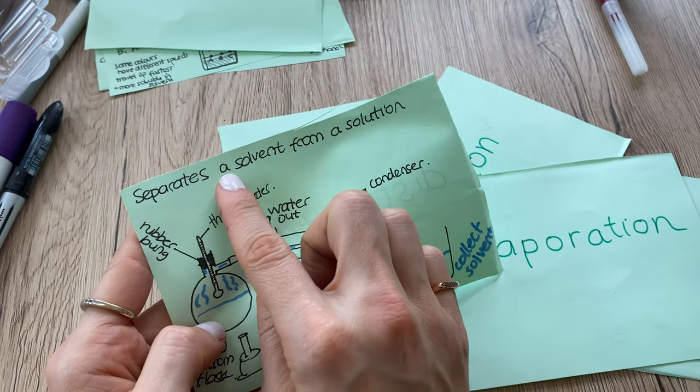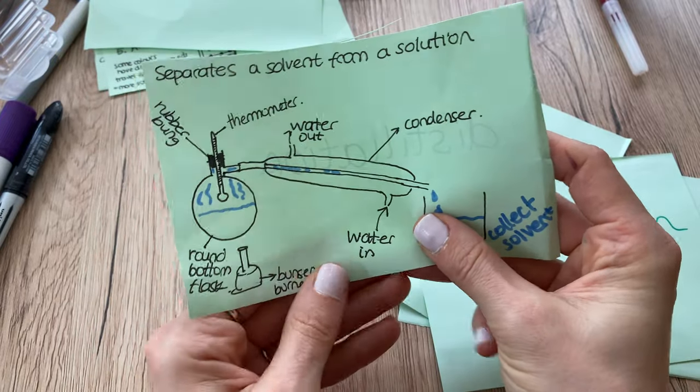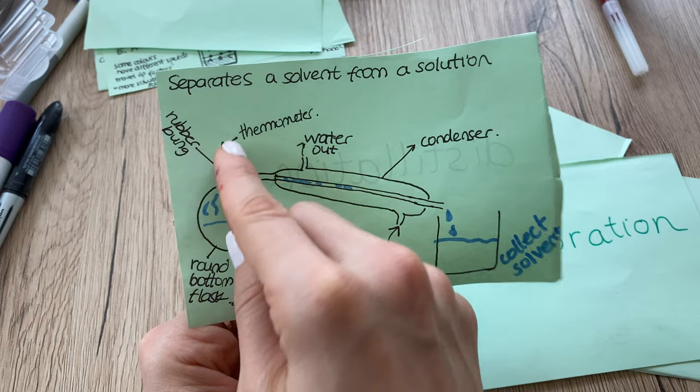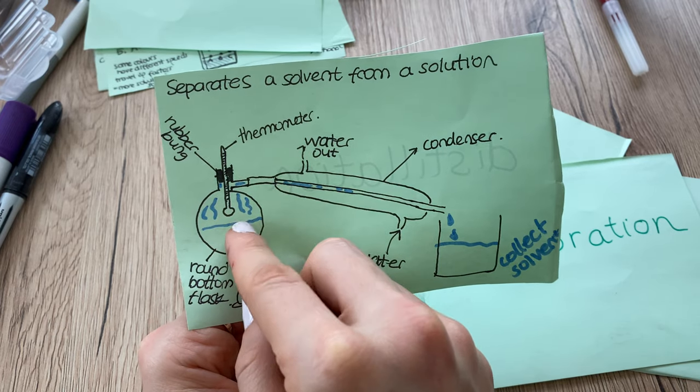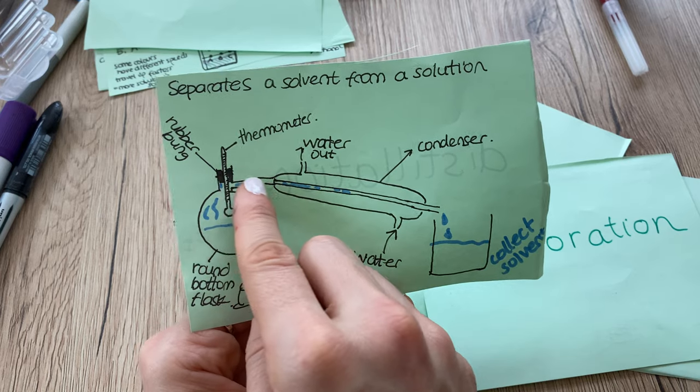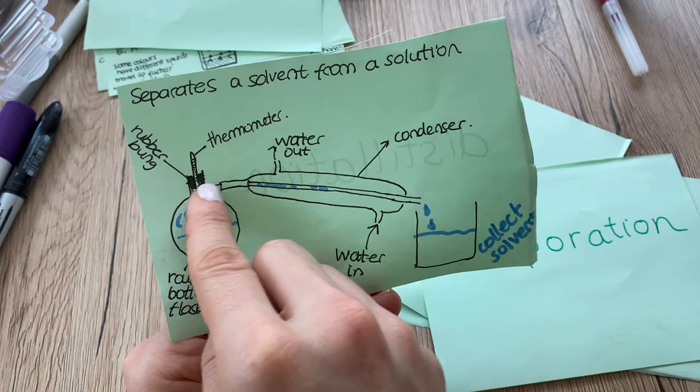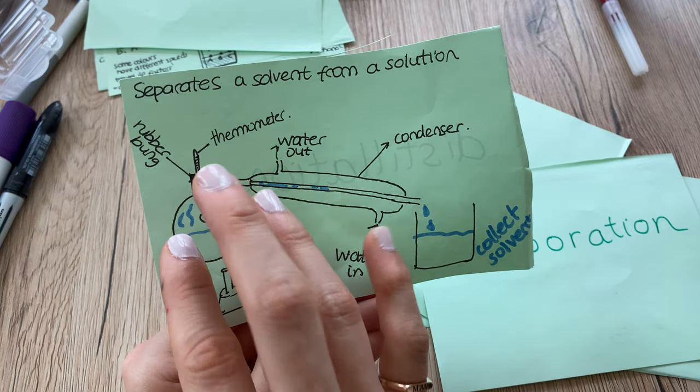It separates a solvent from a solution. We've got a round bottom flask, a rubber bung that has a hole and a thermometer in it so that I can check what temperature it is, then a condenser attached.